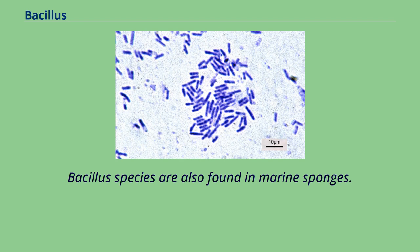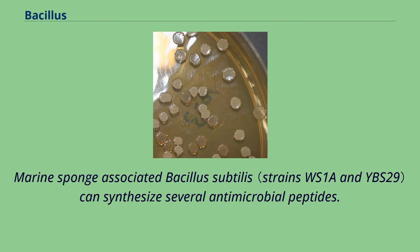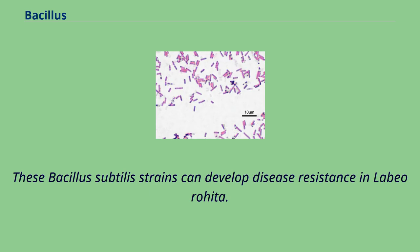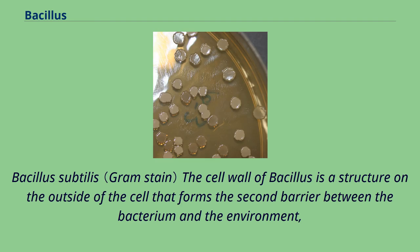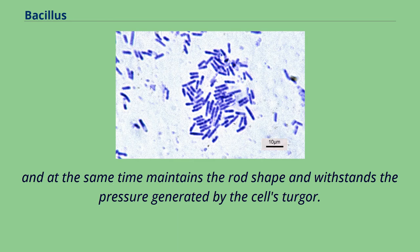Bacillus species are also found in marine sponges. Marine sponge-associated Bacillus subtilis can synthesize several antimicrobial peptides, and these strains can develop disease resistance in Labeo rohita. The cell wall of Bacillus is a structure on the outside of the cell that forms the second barrier between the bacterium and the environment, and at the same time maintains the rod shape and withstands the pressure generated by the cell's turgor.